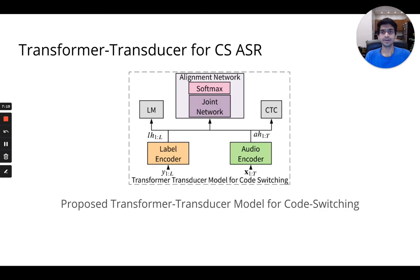Our model consists of a label encoder, audio encoder, and an alignment network comprising a joint network. The LM and CTC objectives are used as auxiliary loss functions for the label and audio encoder respectively. We will discuss more about the objectives later.